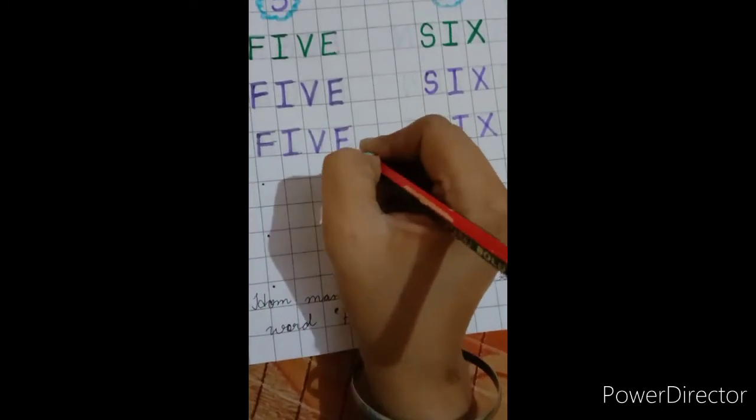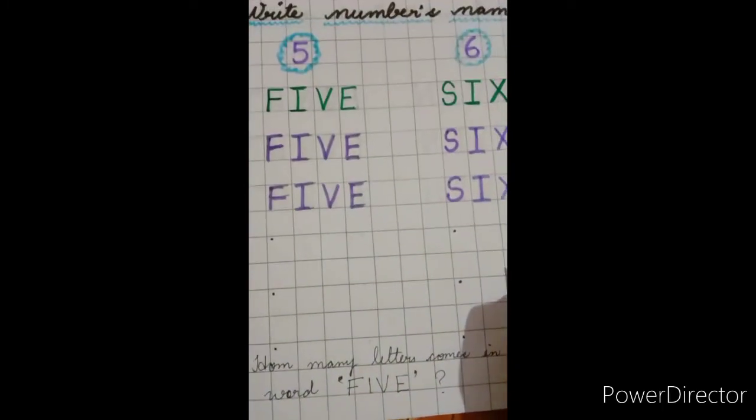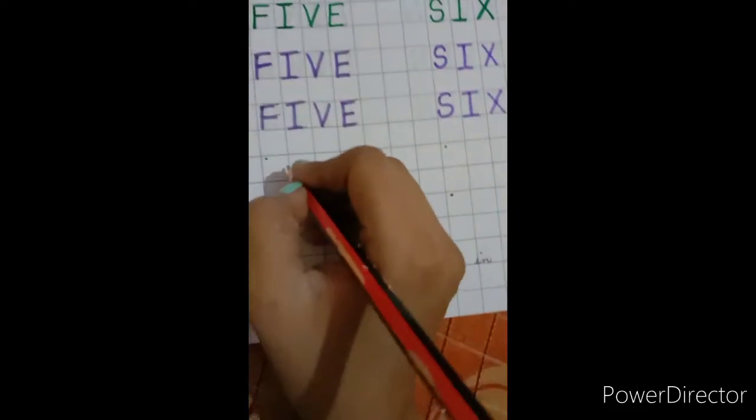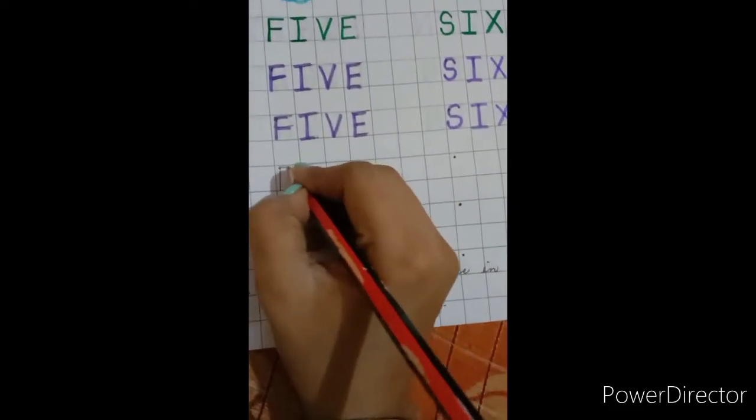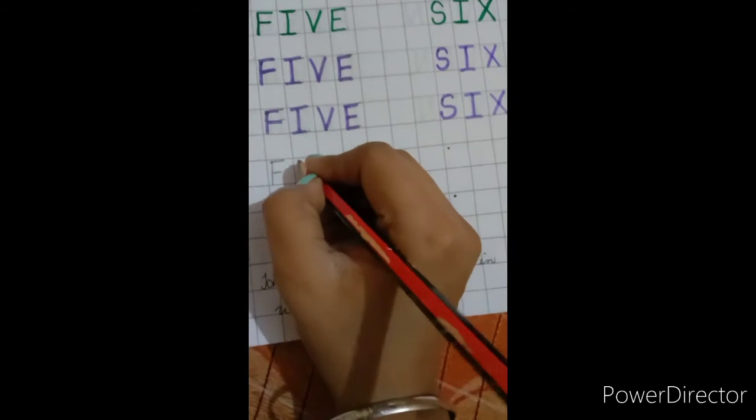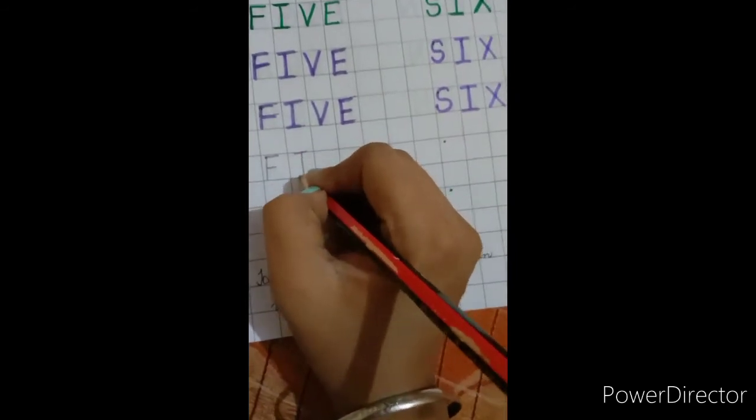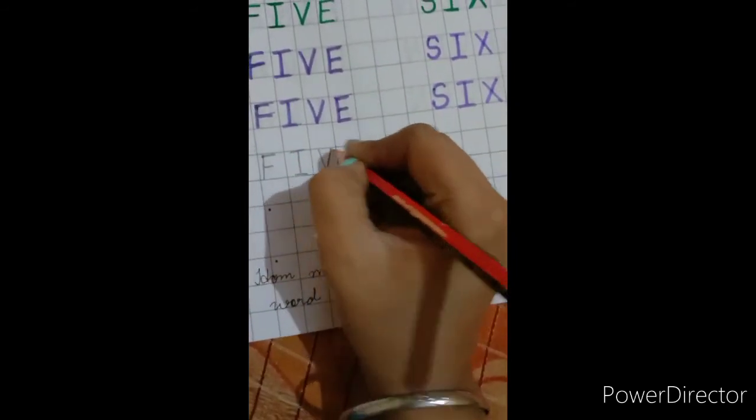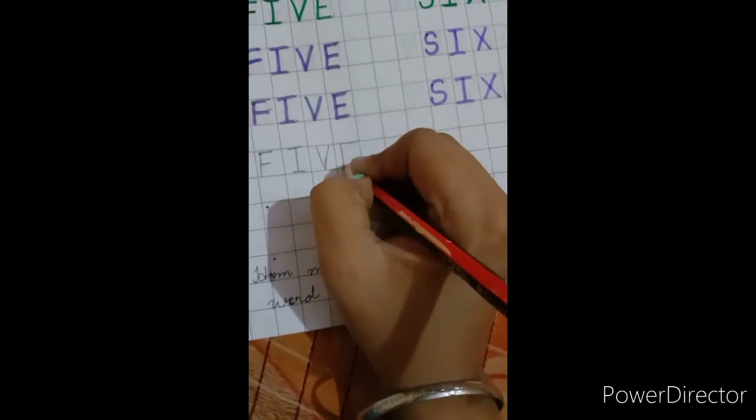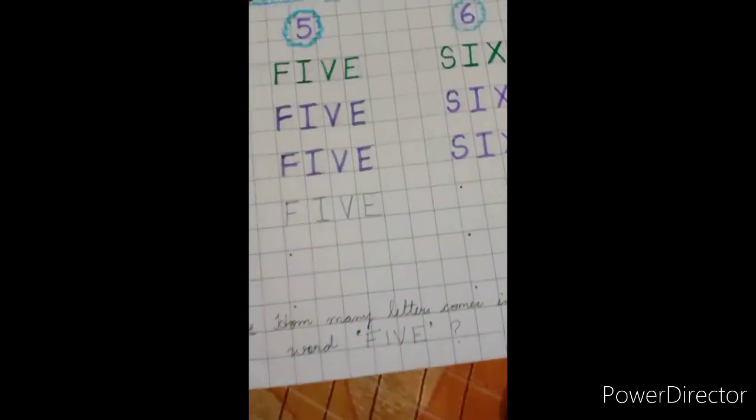Then now we will write karengi F-I-V-E, five, okay. Then six, trace karengi. This is six: S-I-X, six. S-I-X, six, okay.